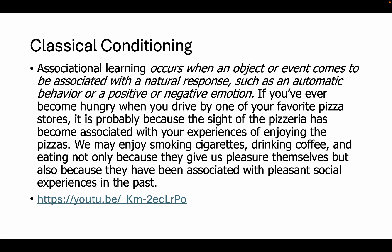Classical conditioning is learning from association, which helps us to anticipate events. Associative learning occurs when an object or event comes to be associated with a natural response, such as an automatic behavior or a positive or negative emotion. If you've ever become hungry when you drive by one of your favorite pizza stores, it's probably because the sight of the pizzeria has become associated with your experience of enjoying the pizzas. We may enjoy smoking cigarettes, drinking coffee, and eating not only because they give us pleasure themselves, but also because they've been associated with pleasant social experiences in the past.